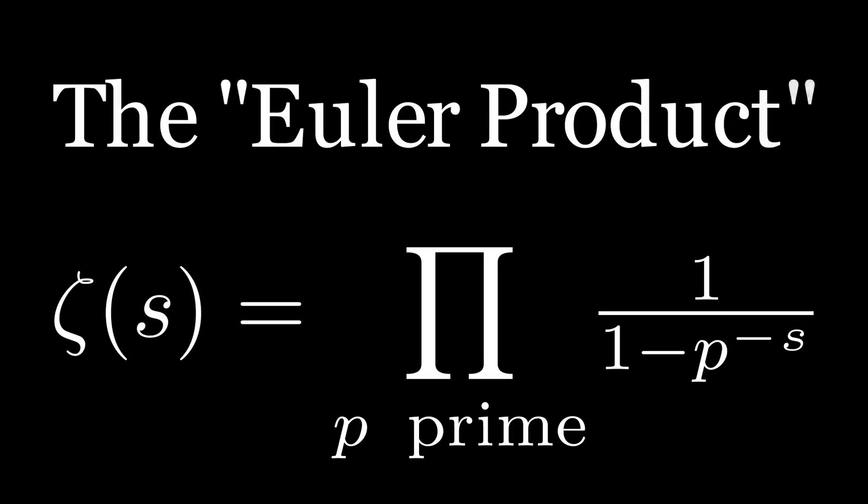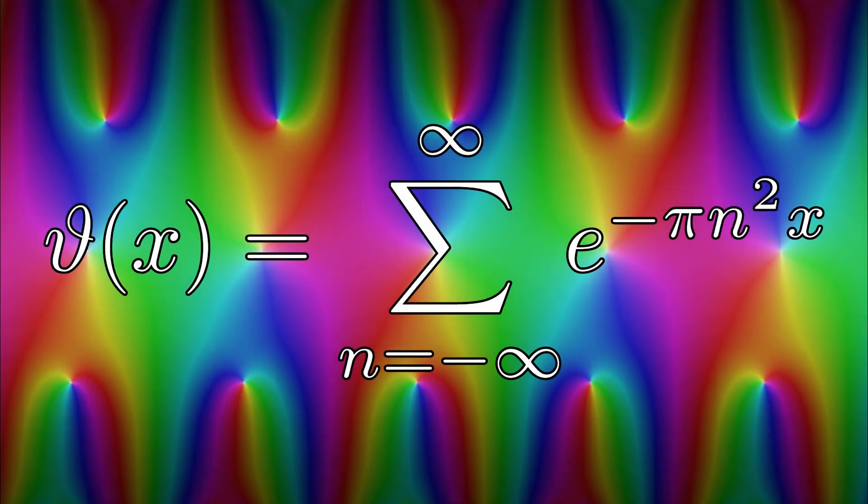This is a good place to stop for now. In the next episode, I plan to discuss something called the Jacobi theta function, a modular form of weight one half, which will be connected to the mathematics that we're going to look at. In the meantime, please feel free to ask any questions in the comments section, and I'll do my best to answer them.